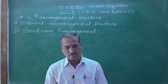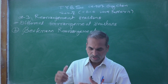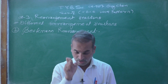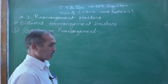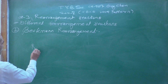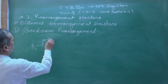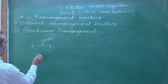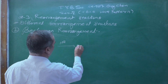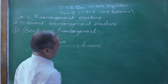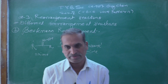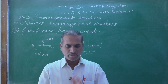Yesterday we discussed the Beckmann rearrangement reaction, and today we are going to discuss the rest of it. In the Beckmann rearrangement, the starting material is an oxime derivative R–C(=NOH)–R′, which is treated with an acid catalyst to give an amide R–C(=O)–NH–R′.